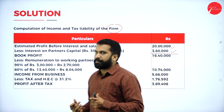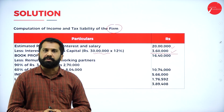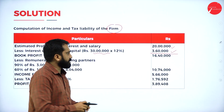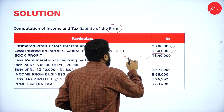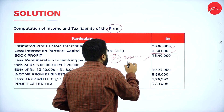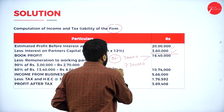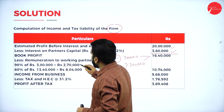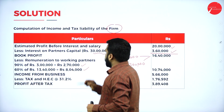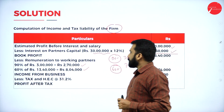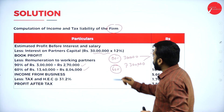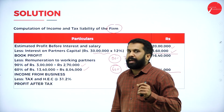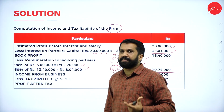Now, what is the remuneration? They have not given any remuneration, so we use the standard limit on 16 lakh 40,000: up to 3 lakh at 90%, above 3 lakh at 60%. Calculating: 3 lakh × 90% = 2 lakh 70,000; 13 lakh 40,000 × 60% = 8 lakh 4,000. Total maximum permissible remuneration = 10 lakh 74,000. Comparison is not required here since actual remuneration is not given. Book profit after remuneration: 5 lakh 66,000. Tax at 31.2% = 3 lakh 89,402, distributed equally between partner 1 and partner 2.